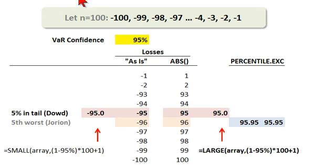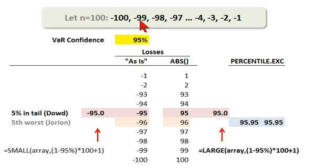To illustrate, I've assumed a sample of 100, so n equals 100. That means we observe 100 loss observations in our trailing window. I've very conveniently made it so that our worst loss is negative 100, then our next worst loss is negative 99, and so on, up to our best or least worst loss of negative one. So 100 loss observations that I've ordered.